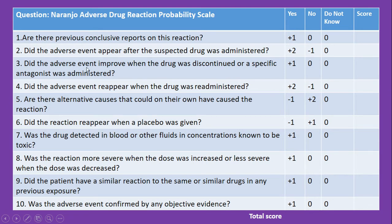The third question is: did the adverse event improve when the drug was discontinued or a specific antagonist was administered? If yes, put plus 1; if no or do not know, it is 0. The fourth question is: did the adverse event reappear when the drug was re-administered? If yes, it is plus 2; if no, it is minus 1; and 0 for do not know.